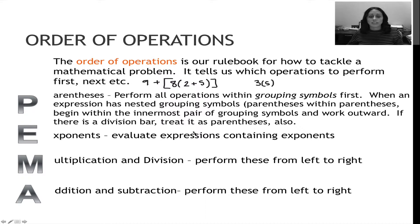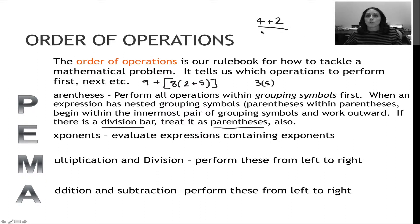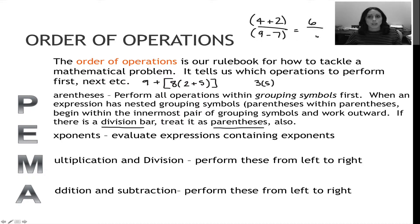One more thing about parentheses: if you have a division bar, treat it as parentheses as well. So if you have 4 plus 2 over 9 minus 7, pretend there are parentheses around the top and bottom. Add the 4 and 2, subtract the 9 and 7, then divide. So 6 divided by 2 is 3. Division bars must be treated as implied parentheses.